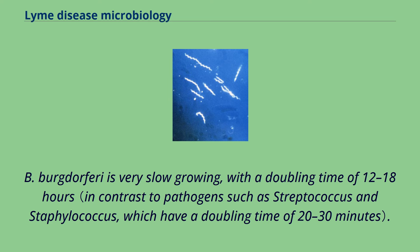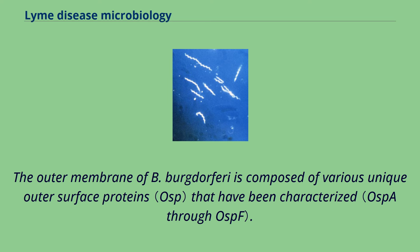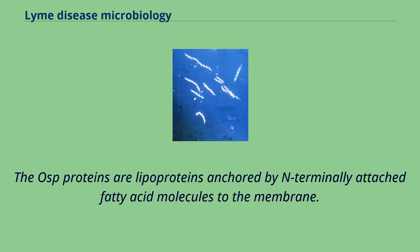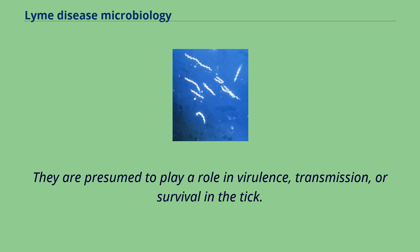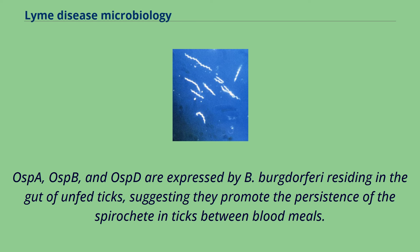This structure allows the spirochete to move efficiently in corkscrew fashion through viscous media, such as connective tissue. B. burgdorferi is very slow-growing, with a doubling time of 12 to 18 hours. The outer membrane of B. burgdorferi is composed of various unique outer surface proteins that have been characterized. The OSP proteins are lipoproteins anchored by N-terminally-attached fatty acid molecules to the membrane. They are presumed to play a role in virulence, transmission, or survival in the tick. OSPA, OSPB, and OSPC are expressed by B. burgdorferi residing in the gut of unfed ticks, suggesting they promote the persistence of the spirochete in ticks between blood meals.